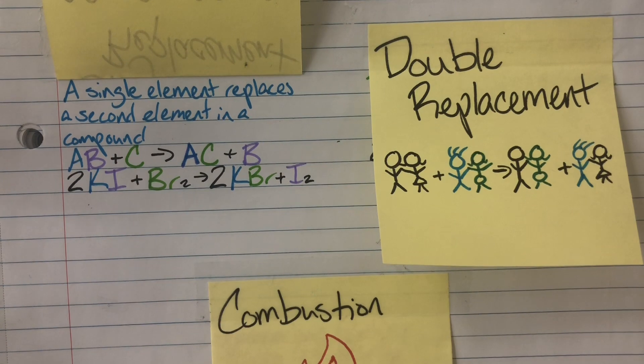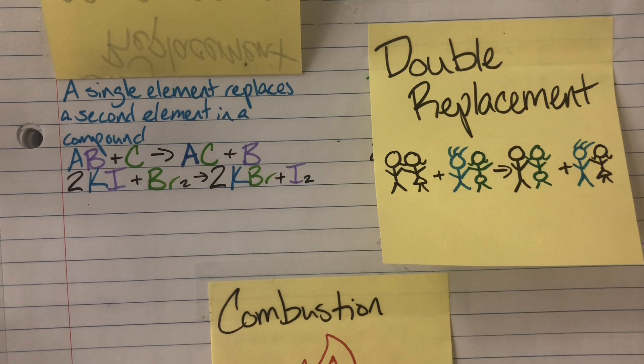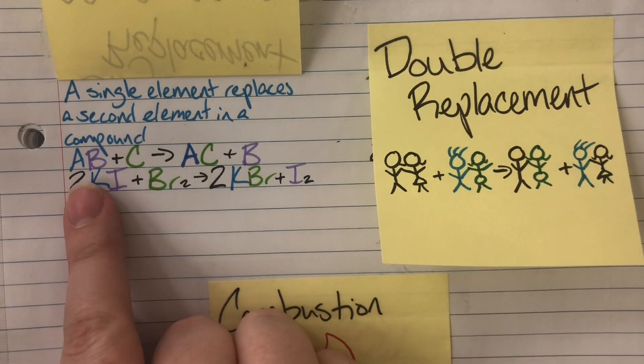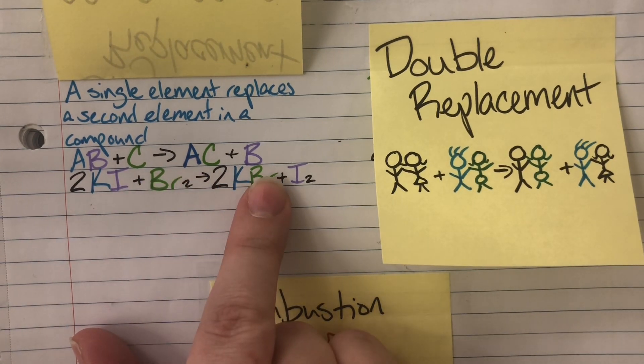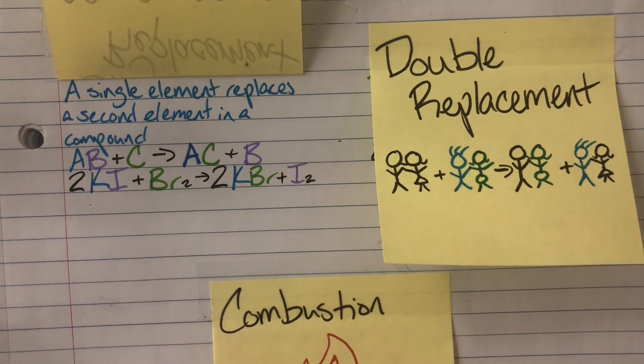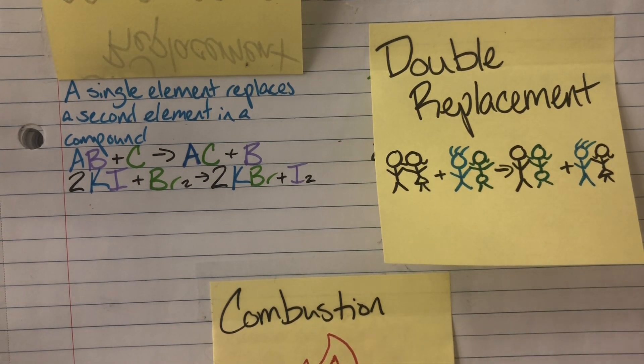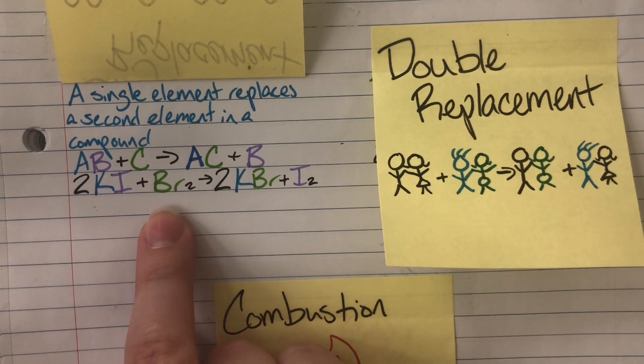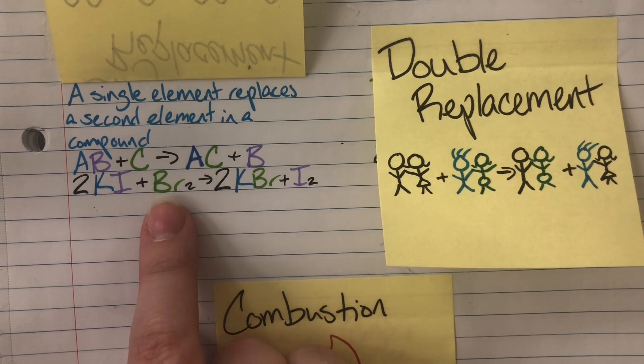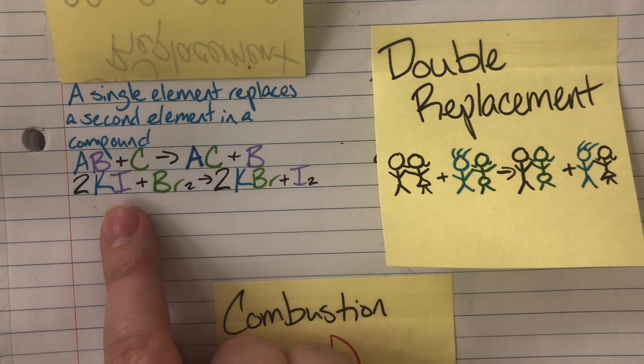Word definition for this is going to be a single element replaces a single element in a compound. Letter example would be AB plus C going to AC plus B. Again I am going to emphasize that like must replace like. So in my actual reaction you can see potassium iodide being introduced to bromine. Bromine is a non-metal and so is iodine.